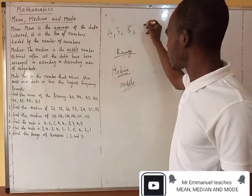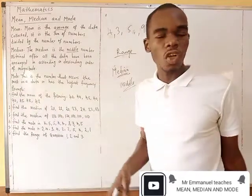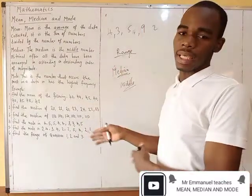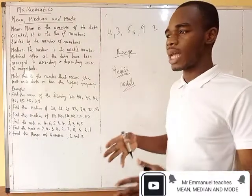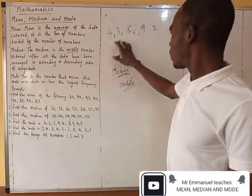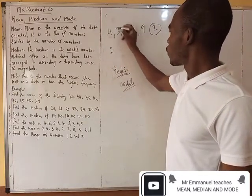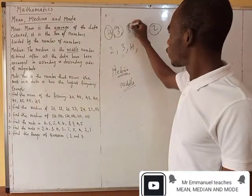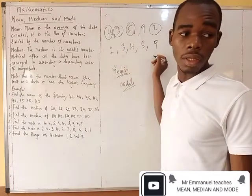If I give you a group of numbers like five, nine, two — and they say you should arrange it in ascending order — it means arrange it from the smallest to the biggest. So if I'm to arrange this in ascending order, the smallest is two, followed by three, followed by four, followed by five, and followed by nine. This is ascending order.